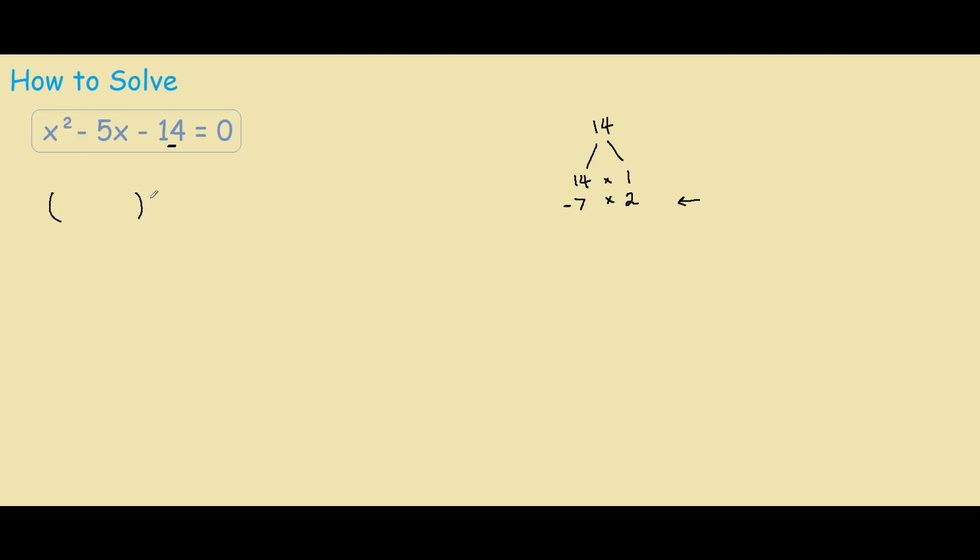So if we do our two brackets like this, we have two x's here, and now we put in our factors, minus 7 and plus 2.